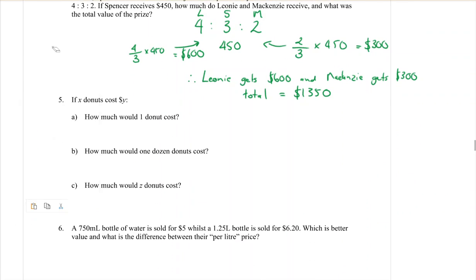Question 5. If X donuts cost Y dollars, so I don't know how many donuts I'm buying, I'm just buying X donuts, and I don't even know how much they cost in terms of a number, it's just going to cost Y dollars. So I'm like, can I have X donuts? And they go yeah sure, that'll cost you Y dollars. Great. How much would one donut cost? Well, I would take the cost of all my donuts. How much do all of my donuts cost? Y. And I would divide that by the number of donuts that I buy. How many donuts am I buying? X. So there is an expression, Y over X would be an expression for the cost of one donut. If we were doing this as a rate, we could say that that was dollars per donut.